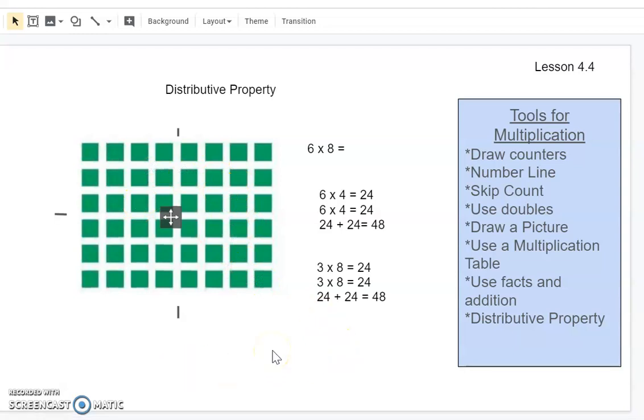So the distributive property is a strategy that you would use when you're solving a multiplication sentence that has larger numbers or greater numbers than your easier ones. And so we added that to our tools for multiplication. It's definitely something to become familiar with. You will hear those words often throughout your schooling distributive property when you are doing math. So it's just good to understand how it works. I will see you next time for lesson 4.5.